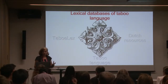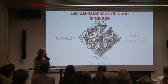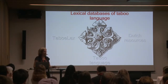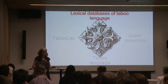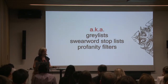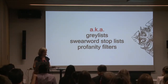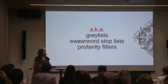We want to create a lexical database for taboo language. For us, that's a digital collection of linguistic constructions — words, word parts, multi-word expressions that have been annotated and enriched in some way. This is related to the look-up lists that you often see in natural language applications, also known as gray lists, swear words, stop lists, profanity filters. Such lists are useful in their own right, but we think that having a more detailed description of taboo language will benefit various applications, as we feel there's no one-size-fits-all solution.